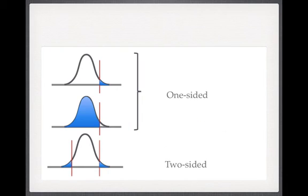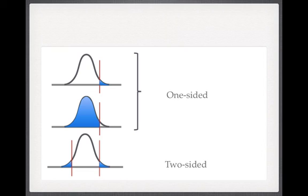In hypotheses one and two we worked out the area on just one side of our T statistic value — these are called one-sided or one-tailed tests. In our third hypothesis, where we were interested in whether the consultant's estimated blood loss was simply different, we worked out two areas: one greater than our T statistic and one less than negative our T statistic. That's a two-sided or two-tailed test, and that's where the name comes from.